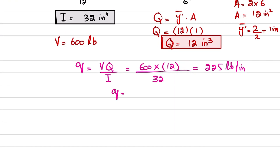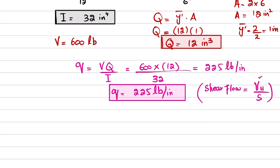So this q is shear flow, which means that it is horizontal shear force per unit length. Shear flow equals horizontal shear force per unit length. From here you will find this horizontal shear force.